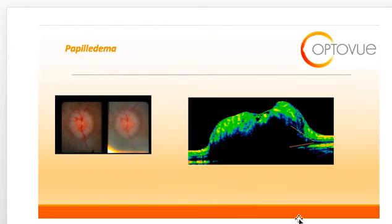You will also see an area of subretinal hyporeflective fluid, which we call a lazy or recumbent V pattern. This is specific for true disc edema, and you will not see it in other forms of pseudodisc edema.